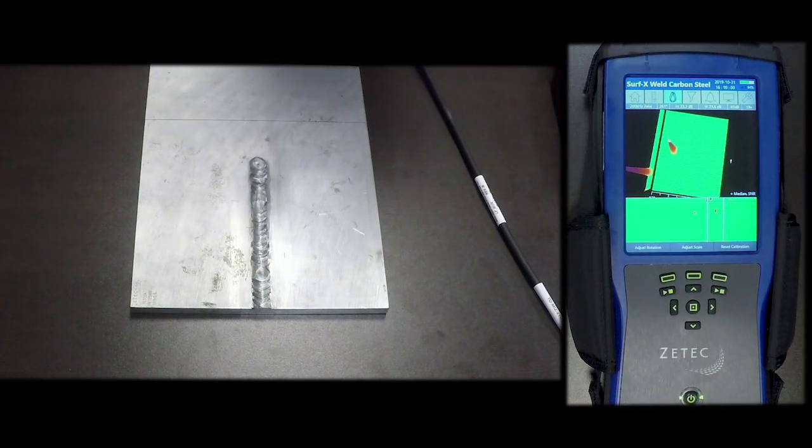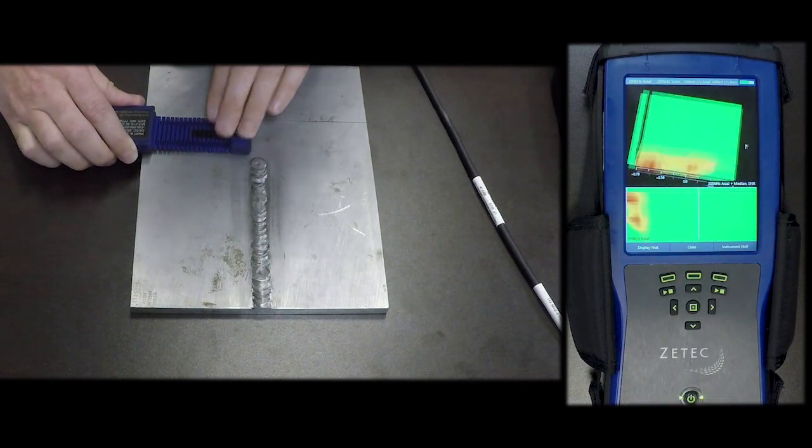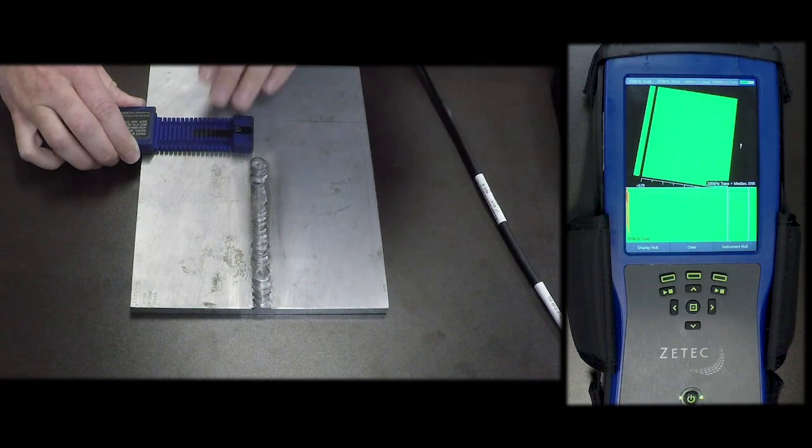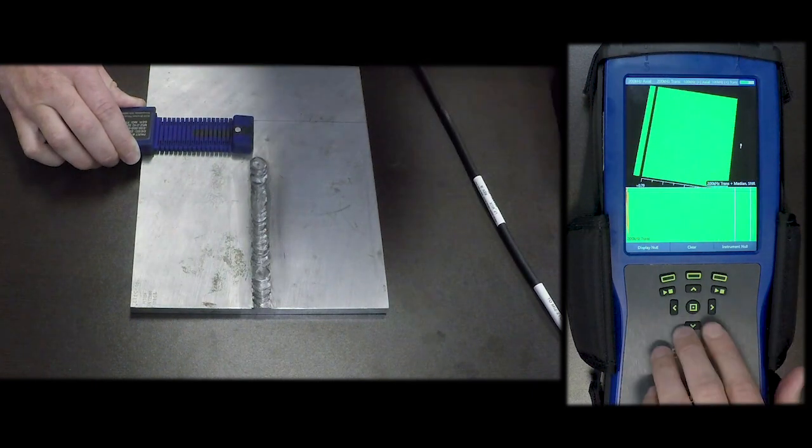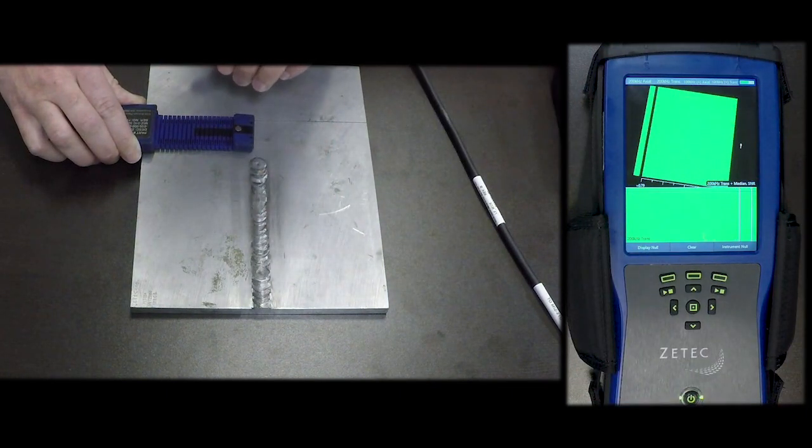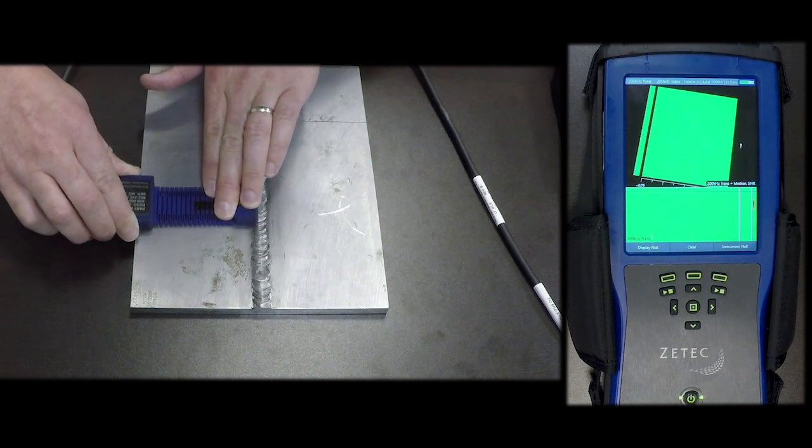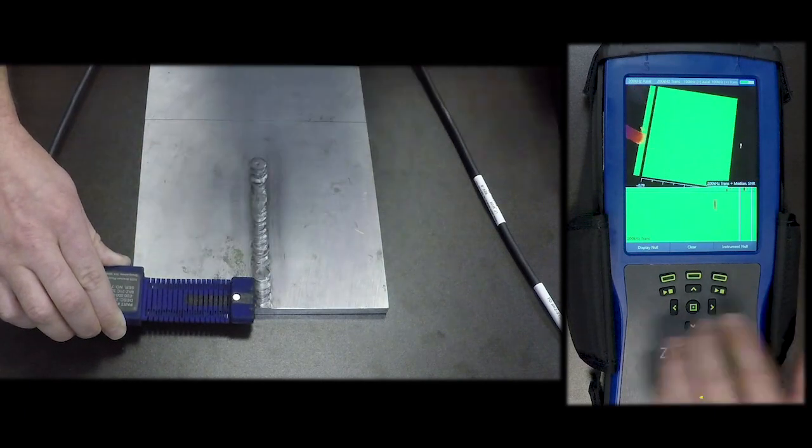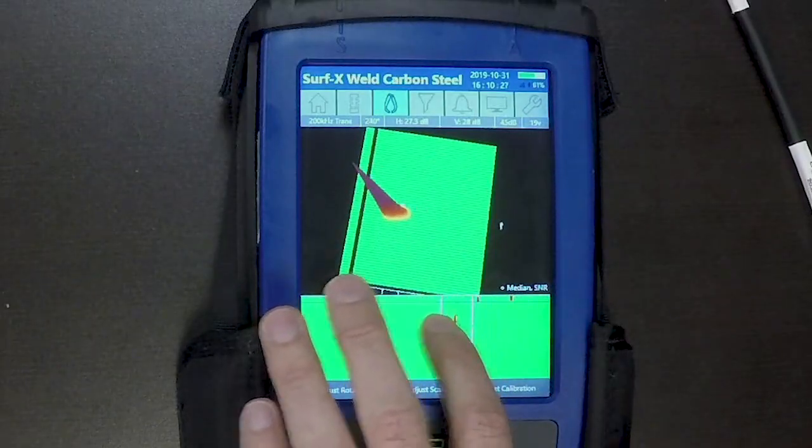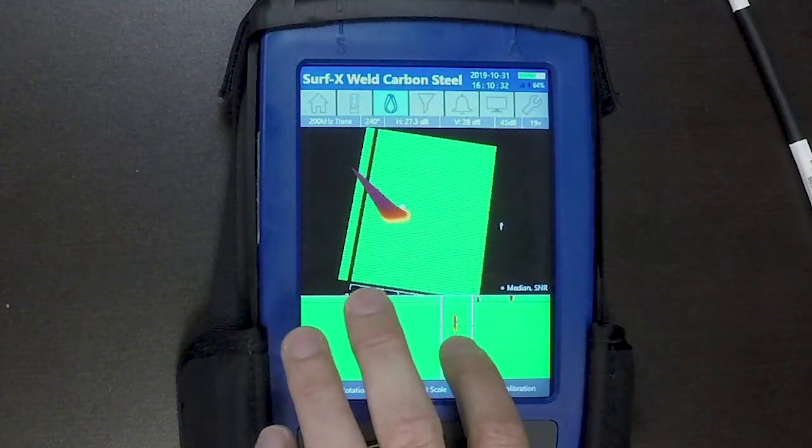Now I'm going to start a scan again. This time I'm going to flip onto the axial transverse, so now I'm on the transverse channel and you can see the transverse notches here, so I'm going to run this. You can see again I'm picking up the transverse indication in the heat affected zone up here.